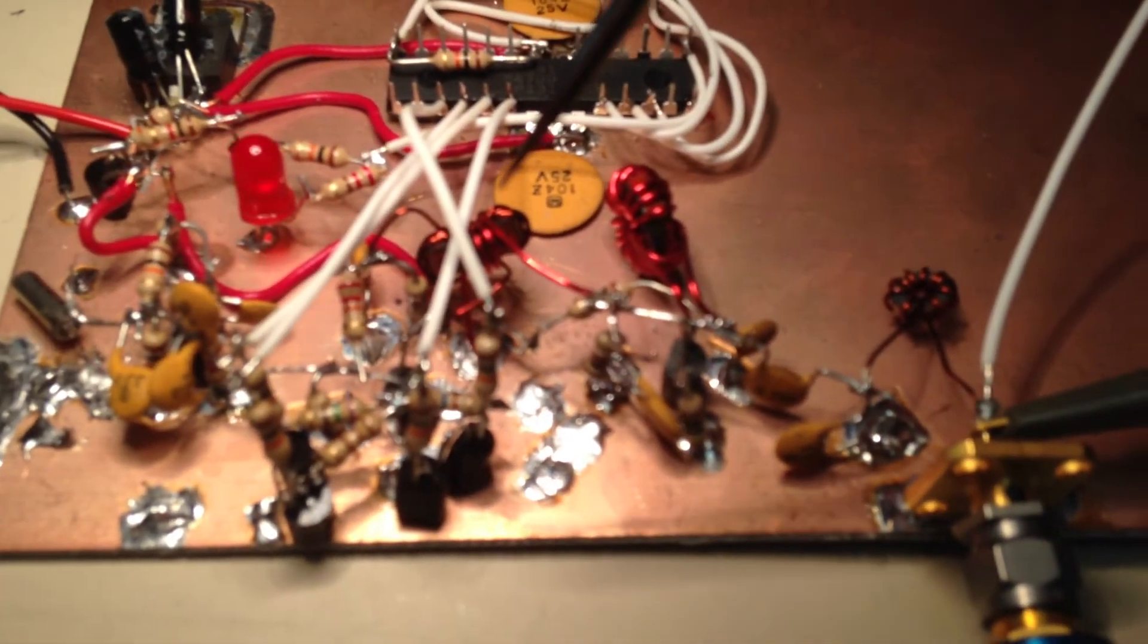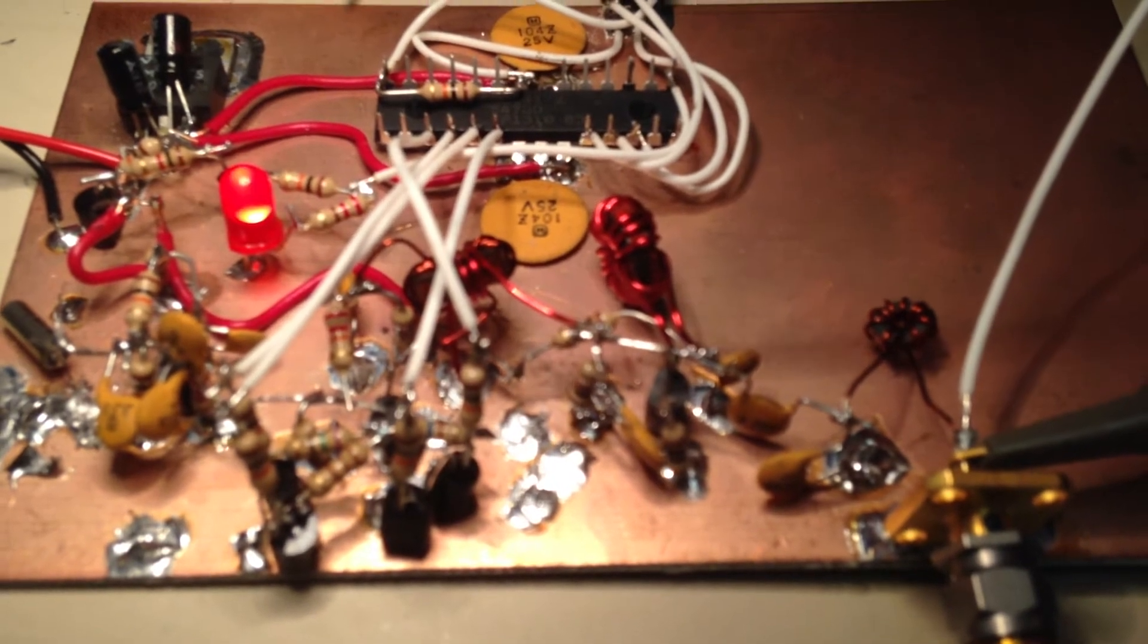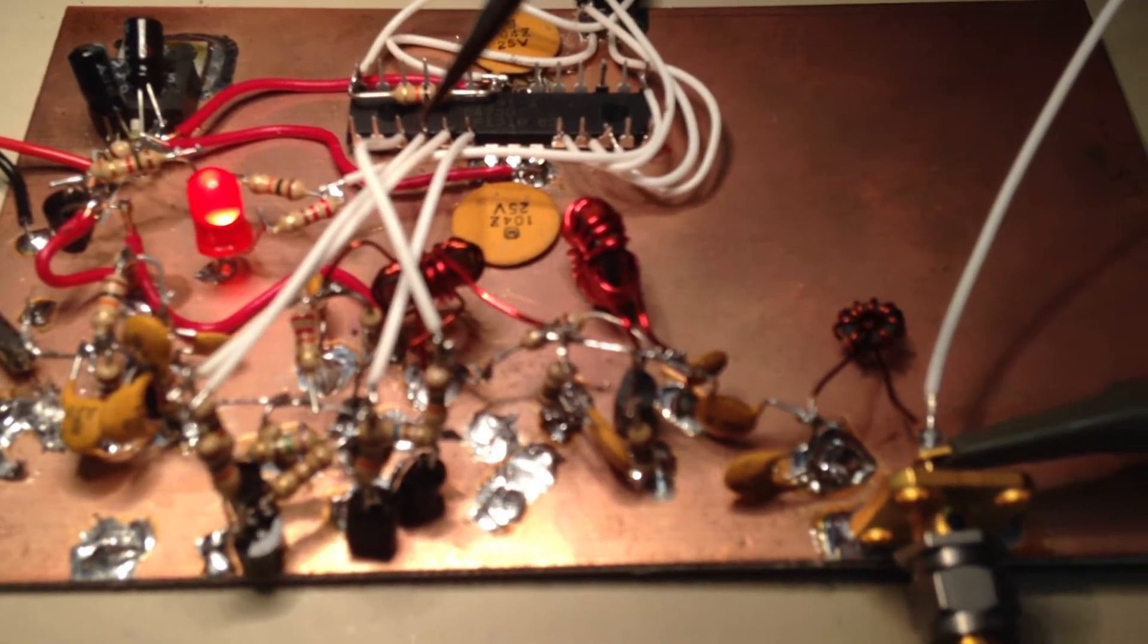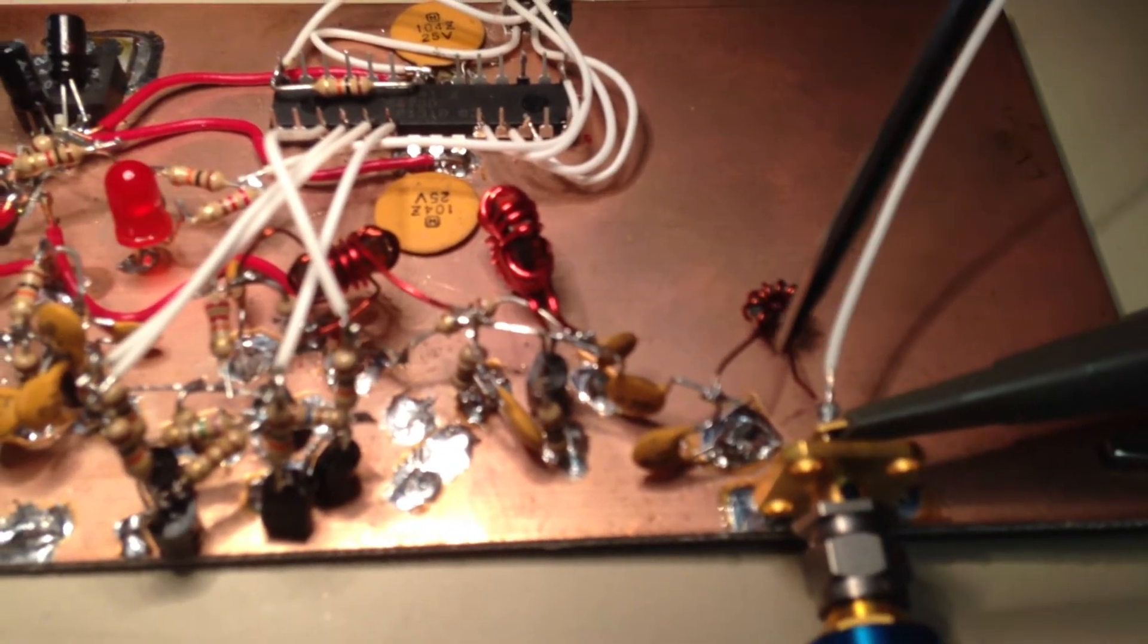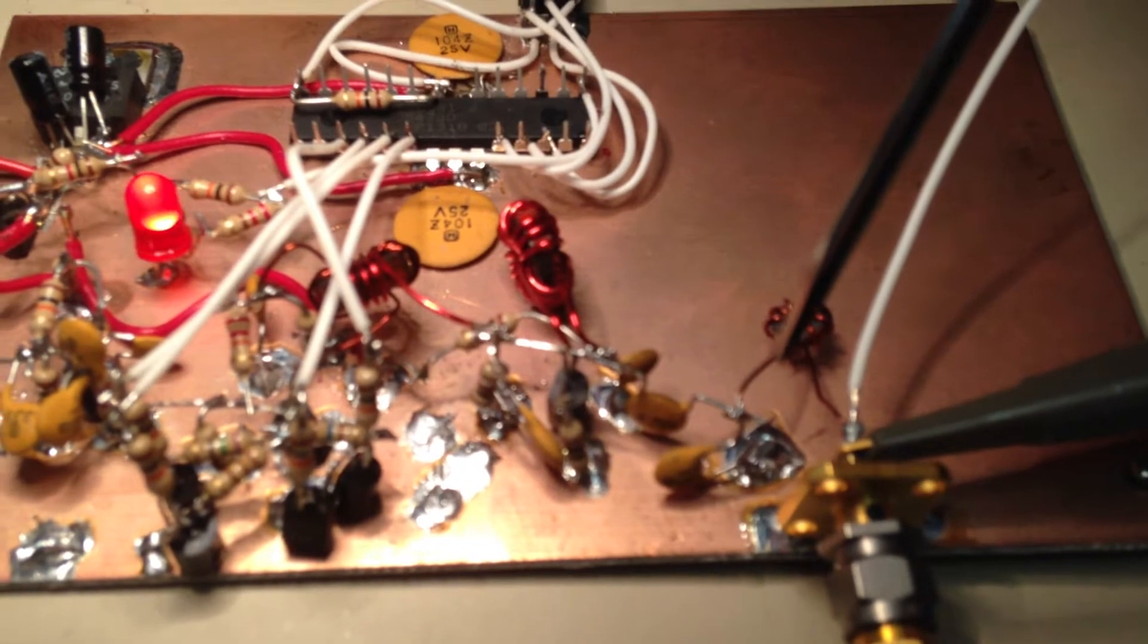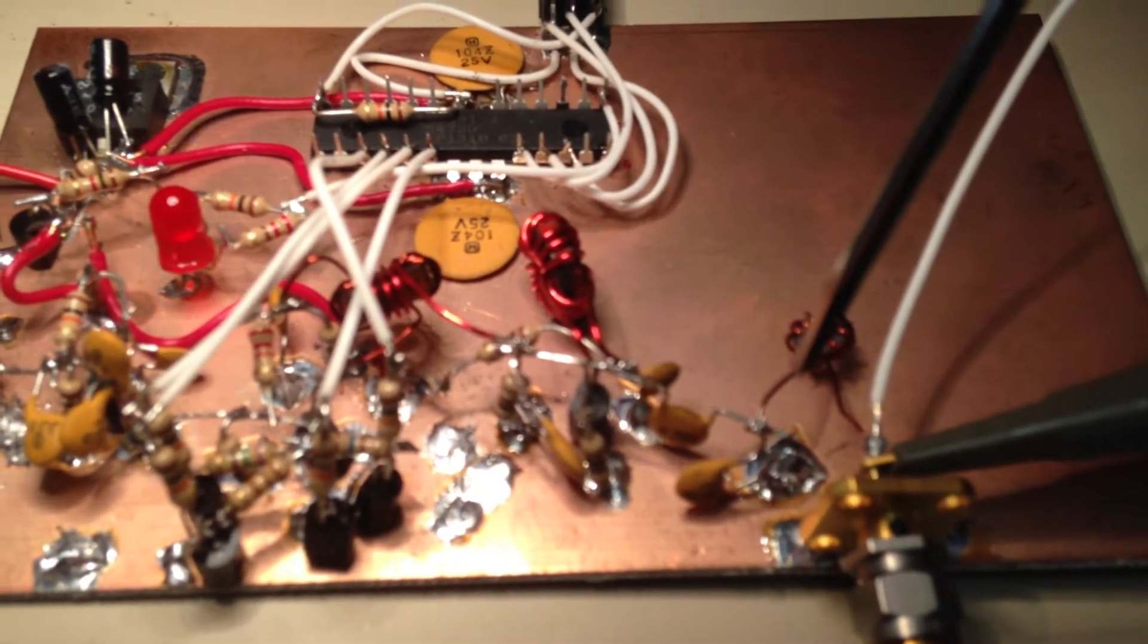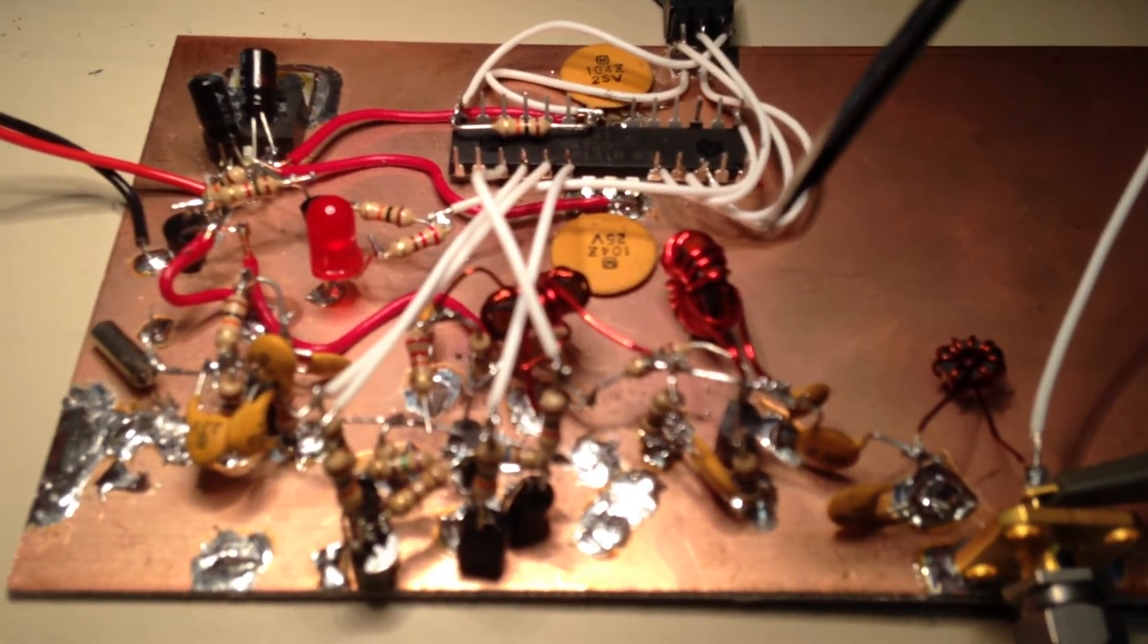I'm able to get 27 dBm out of this thing, CW, at about 12 volts of bias. And I've verified that on the power meter. So overall it's running about 40-48% efficiency. It's 120 mA total current draw at 12 volts and of course 27 dBm output.